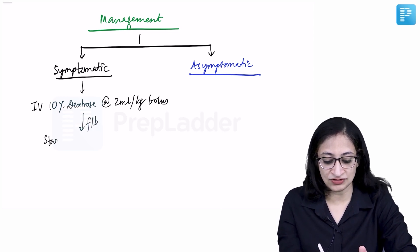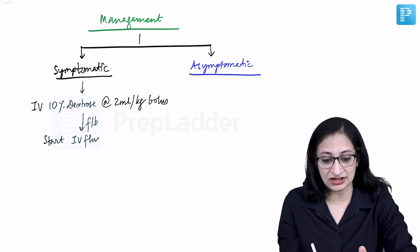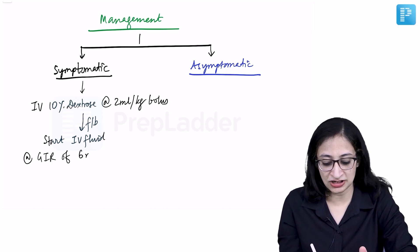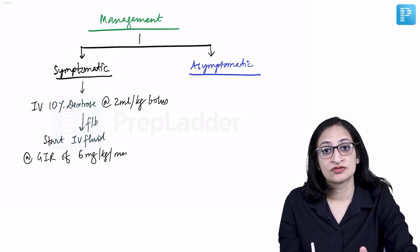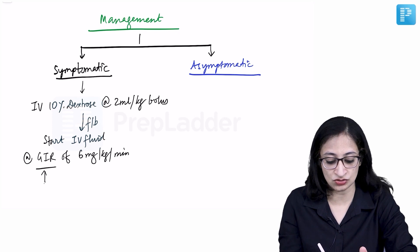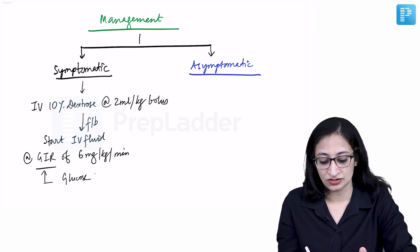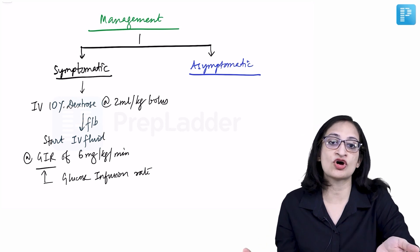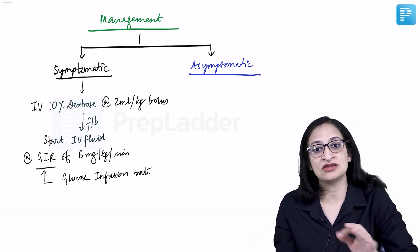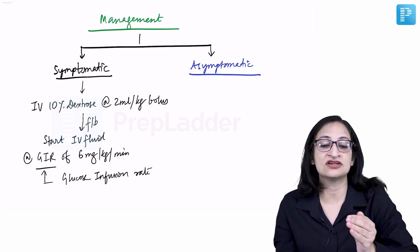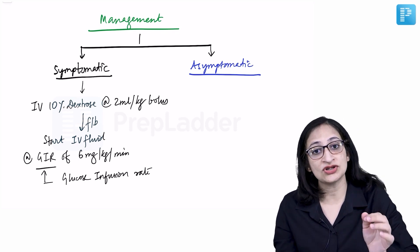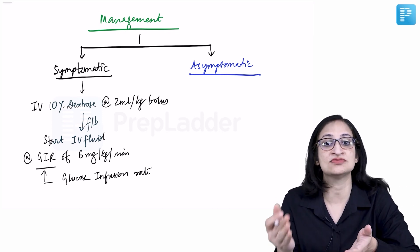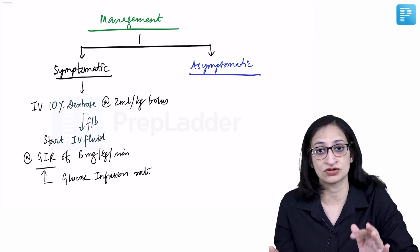Following the bolus, you start IV fluid — dextrose-containing IV fluid — usually at a GIR of 6 mg per kg per minute. GIR refers to the glucose infusion rate. We start at 6 mg per kg per minute, and if hypoglycemia continues, we can increase to 8, 10, or 12 mg per kg per minute.